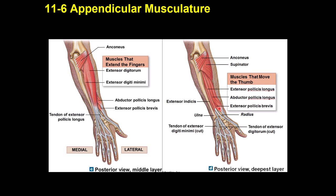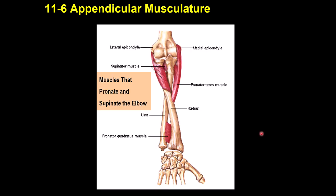Muscles for pronation include pronator teres, located proximally, and pronator quadratus, located distally. The supinator muscle, located proximally, causes supination. In supination, the two forearm bones are parallel and the palm faces anteriorly; in pronation, the bones cross and the palm faces posteriorly.